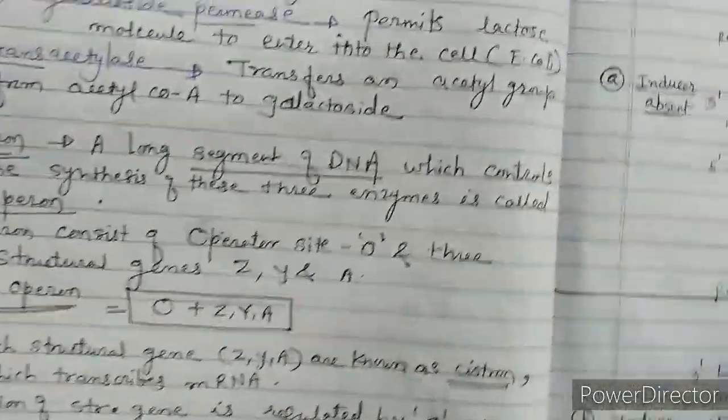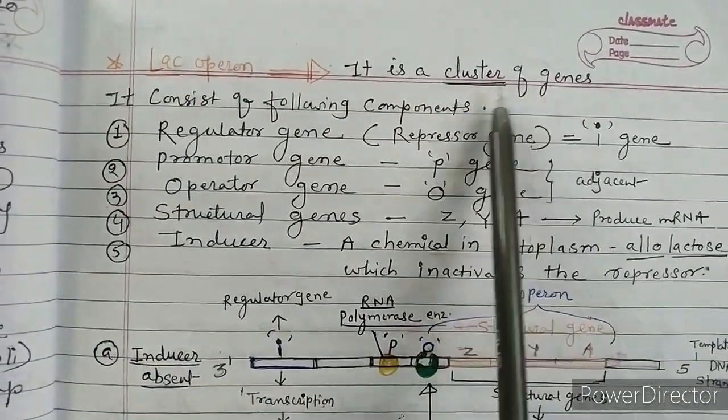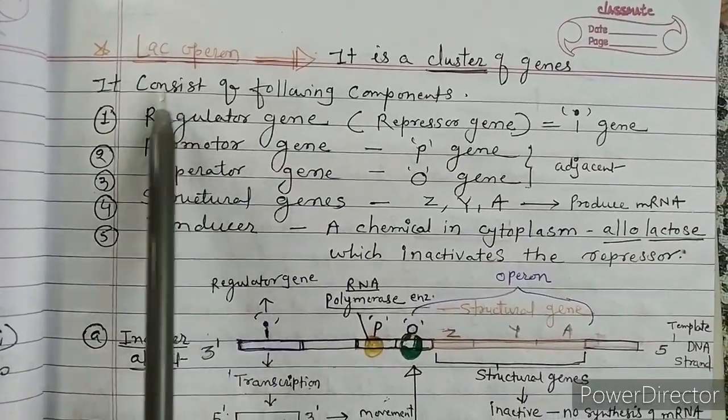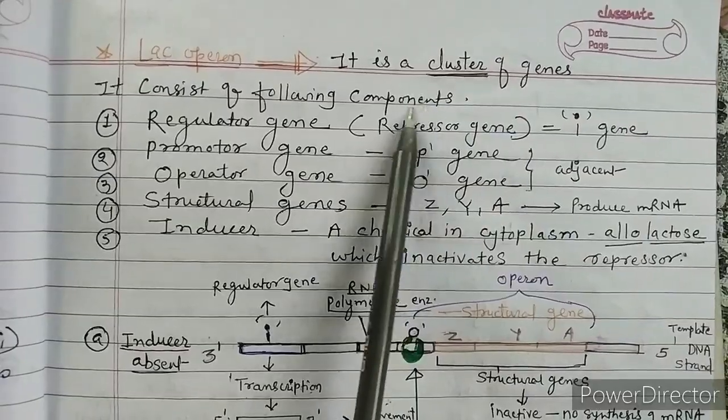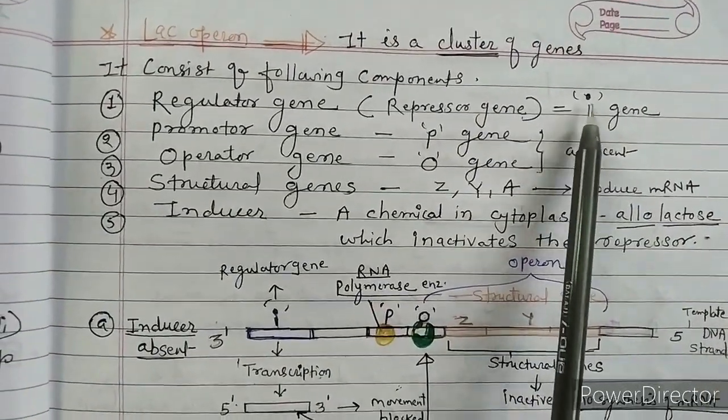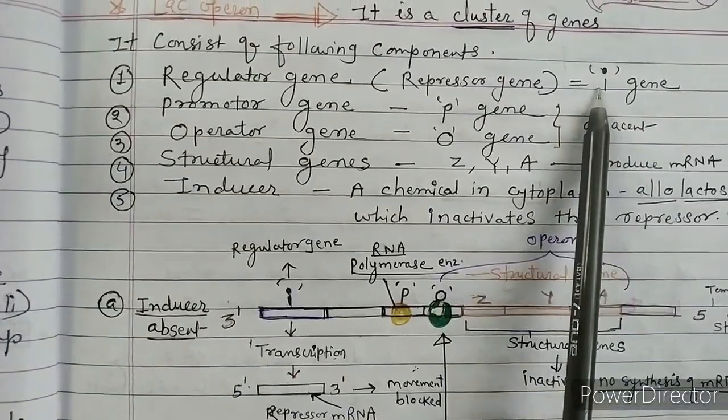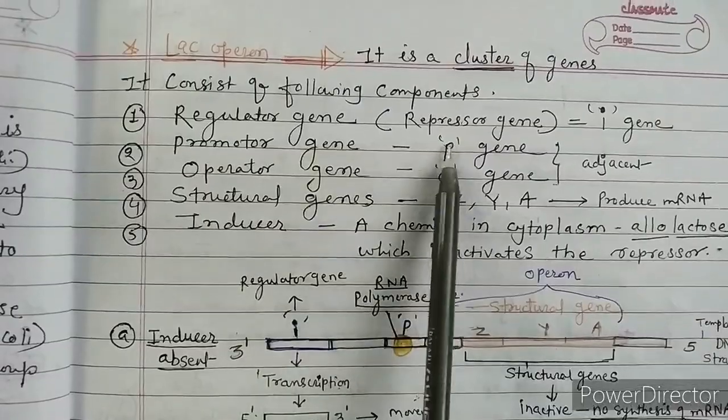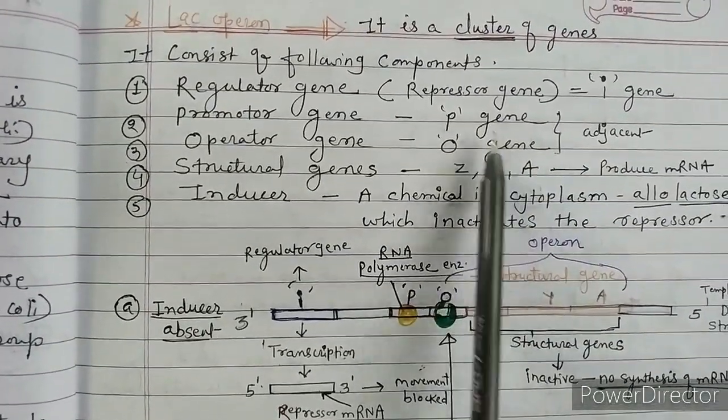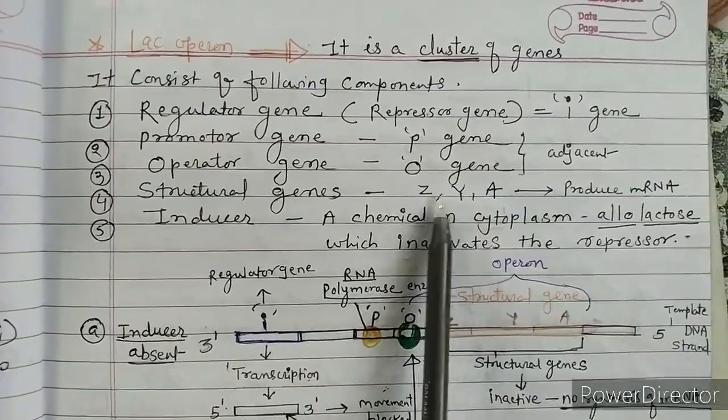Now see here about the lac operon. This lac operon is actually a cluster of genes. This lac operon consists of following components: first is regulator gene, also called as repressor gene, denoted as small i; second gene is promoter gene denoted as P; third gene is operator gene O; and the P gene is always adjacent to the O gene. Fourth are the structural genes Z, Y, A that produce the messenger RNA.